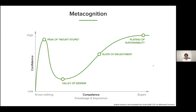Metacognition yields what we call the Dunning-Kruger effect. At first, students are on the peak of Mount Stupid — full of confidence at the beginning of their studies. As they go through medical training, they see the depth and breadth of knowledge needed to become competent physicians and enter the valley of despair. Eventually they enter the slope of enlightenment and the plateau of sustainability — when competence and confidence align — supported by good metacognitive skills and an understanding of where they are in their education.